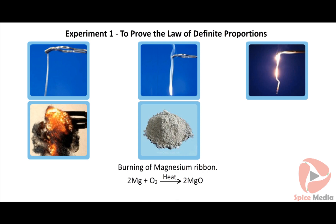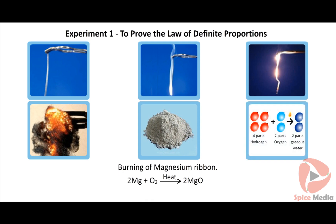Find the ratio by which magnesium combines with oxygen. We can observe that the ratio is constant in all cases, showing that the elements combine in a fixed ratio by weight. This holds good for compounds formed by different methods but from the same elements.